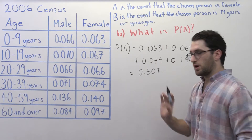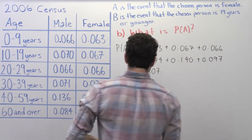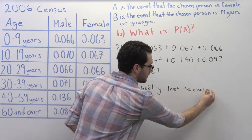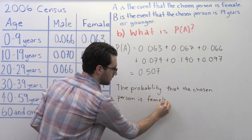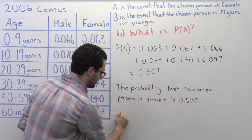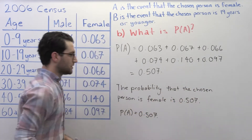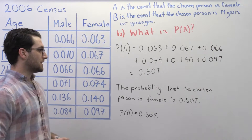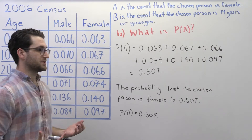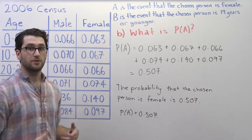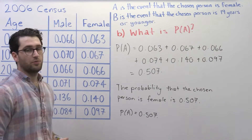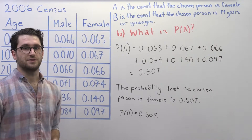So the probability that the chosen person is female, P(A), is 0.507.